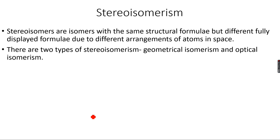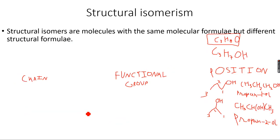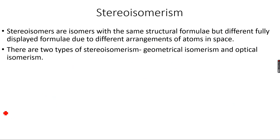Now something new for us is stereoisomerism. Stereo isomers are isomers with the same structural formula but different fully displayed formula, due to different arrangements of atoms in space. In structural isomerism they have the same molecular formula but different structural formula. But in stereo isomers, the molecular formula is the same, the structural formula is the same, but there are different arrangements of atoms in space, and this results in different fully displayed formulas.